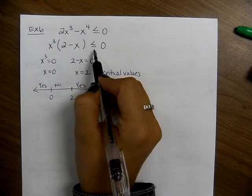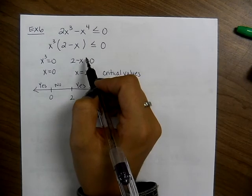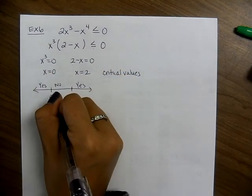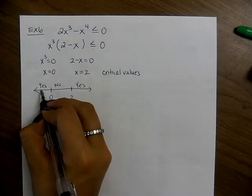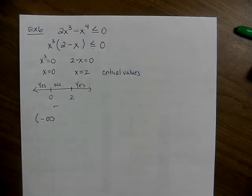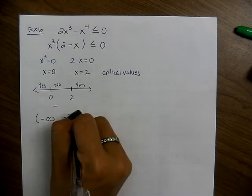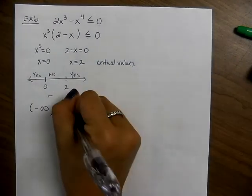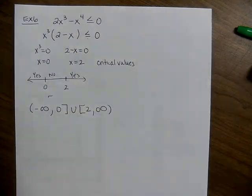Go back and look at the sign — it was a less than or equal to sign, so brackets. Start from negative infinity with a parenthesis, comma 0 with a bracket, in union with bracket 2 to infinity with a parenthesis: (-∞, 0] ∪ [2, ∞). Wait — actually the middle interval was the yes, so the answer is (-∞, 0] ∪ [2, ∞).